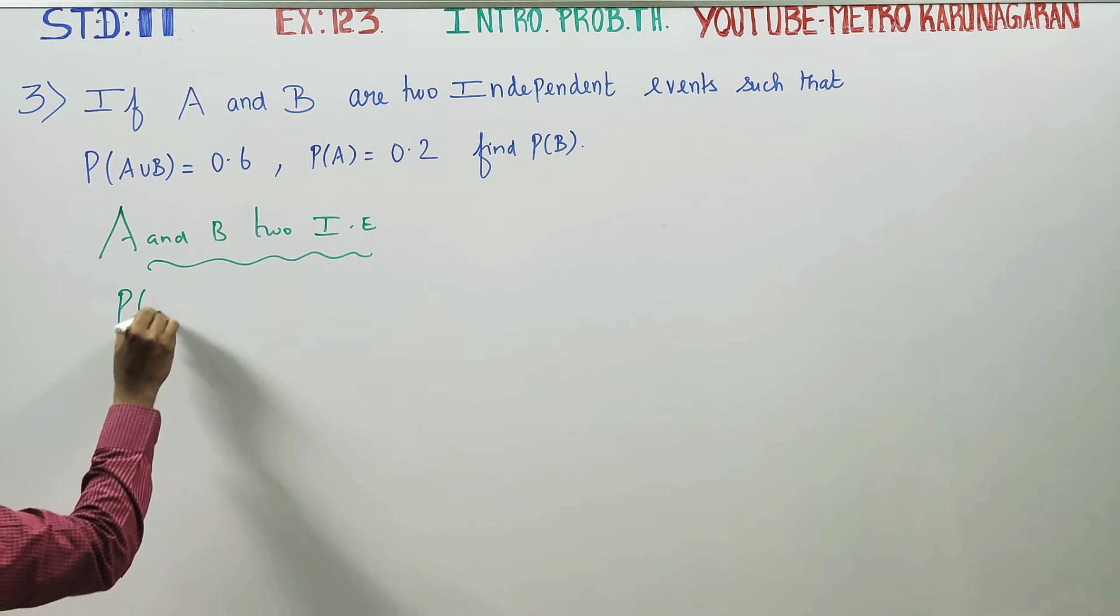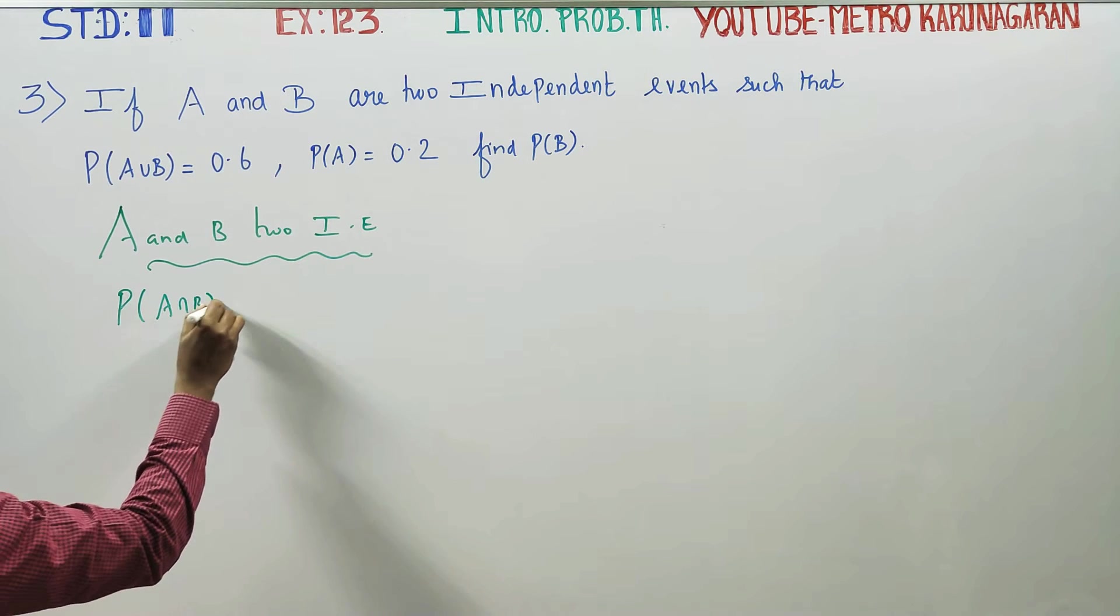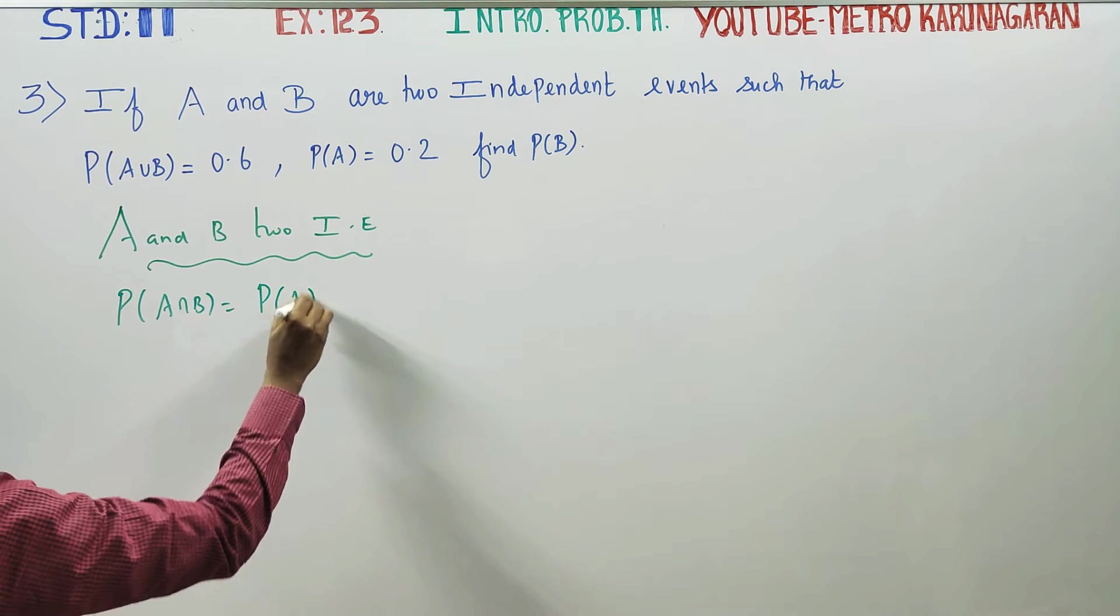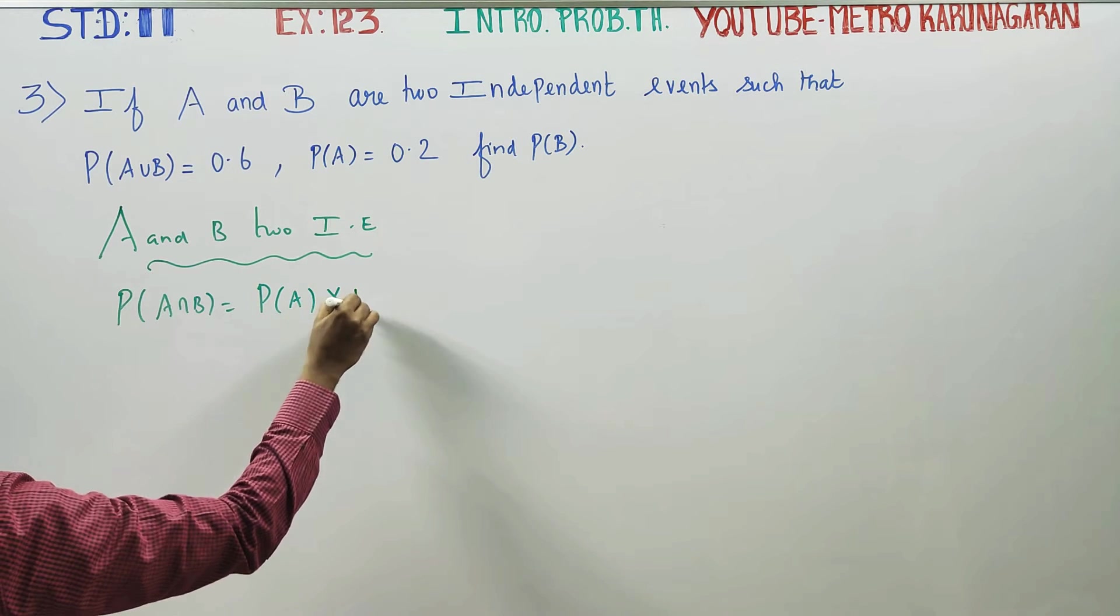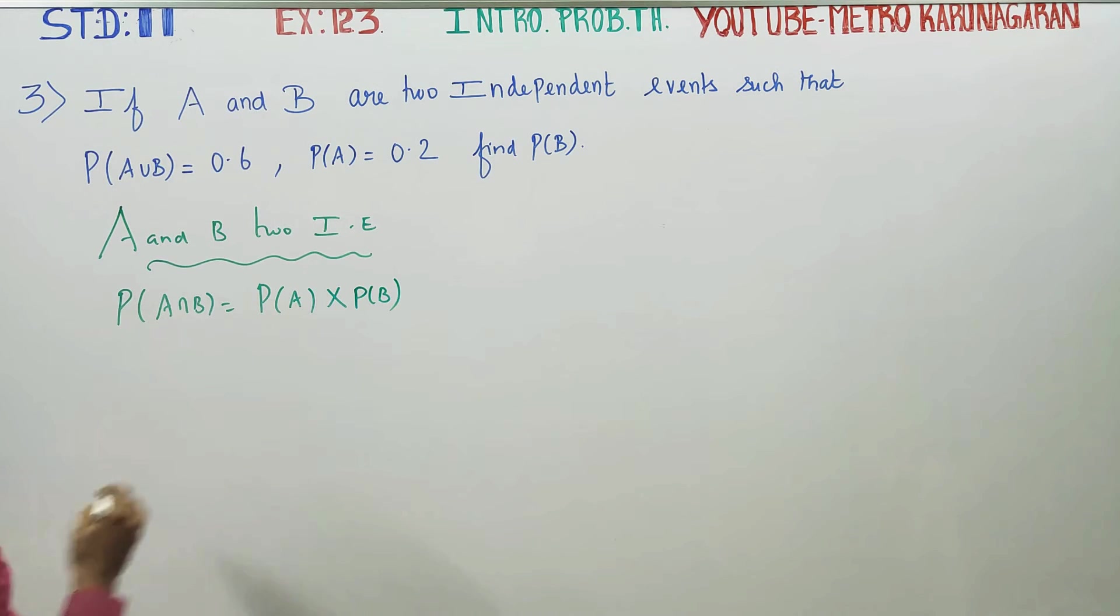Probability of A intersection B is equal to probability of A into probability of B for independent events. With this in mind, we can enter into the sum.